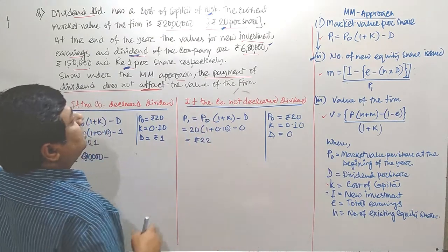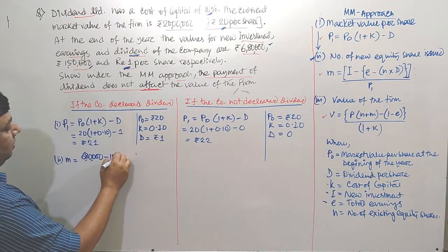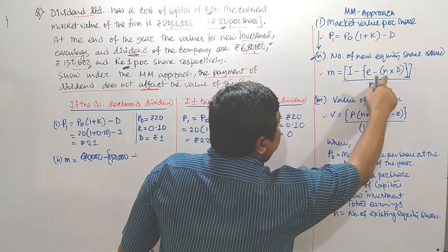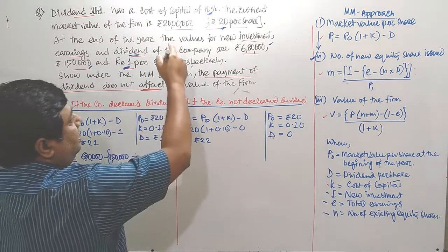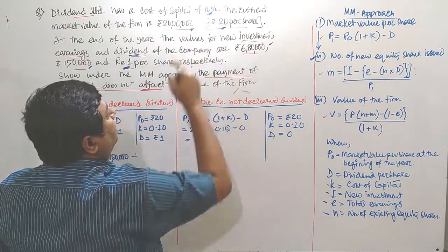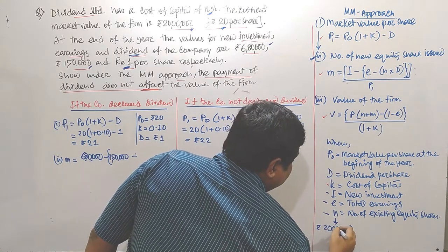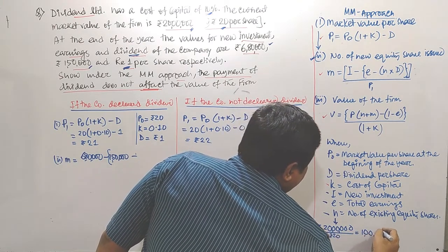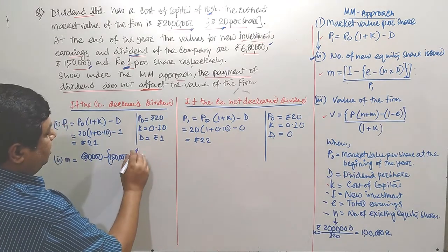E stands for total earnings, which is Rs. 1,50,000. Then we subtract N times D, where N is the number of existing equity shares. The total market value of the firm is Rs. 20,00,000 and the value per share is Rs. 20, so dividing gives us 1 lakh existing shares.